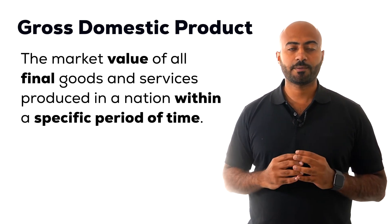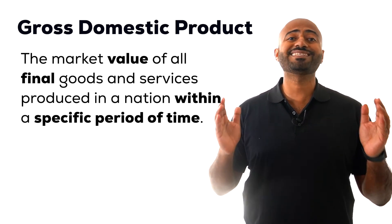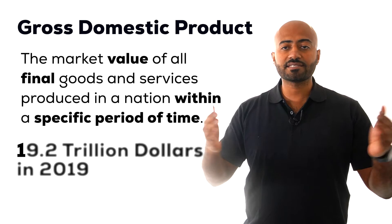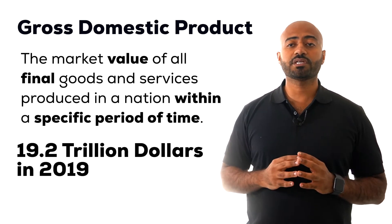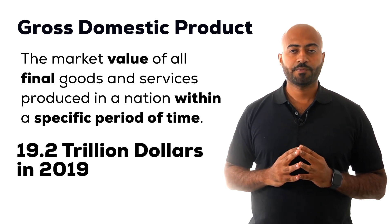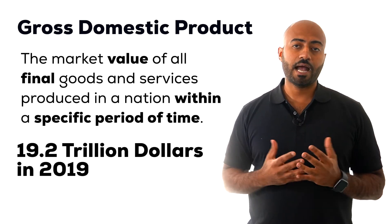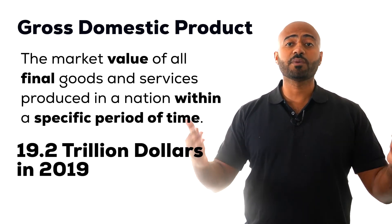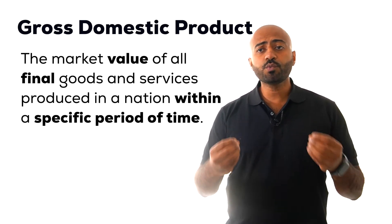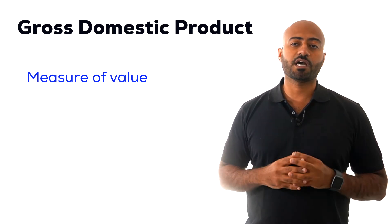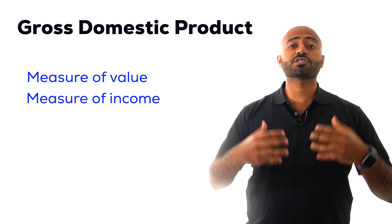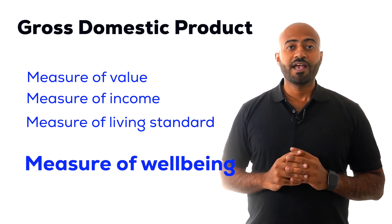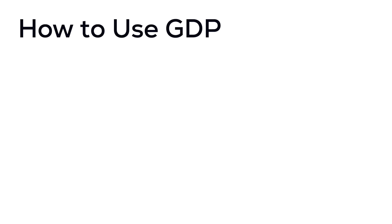Finally, GDP is measured for a specific time frame. It means nothing to say GDP is $19.2 trillion dollars without context. A more accurate way is to say the GDP of the United States was $19.2 trillion in 2019. Most of the time we report GDP by year, but in the US, GDP data is available quarterly. GDP measures the value of what is produced, making it a measure of income, living standards, and overall well-being.